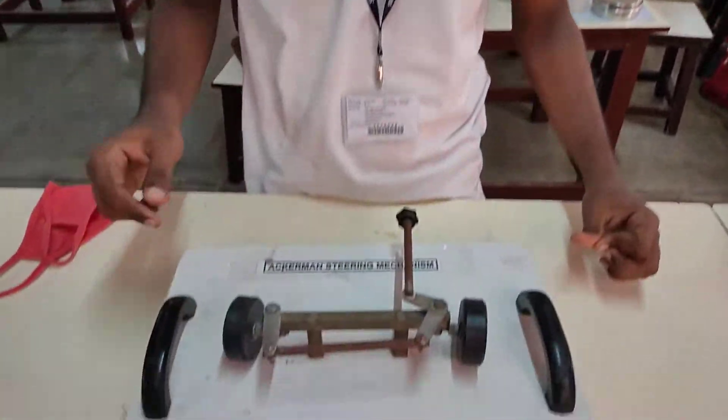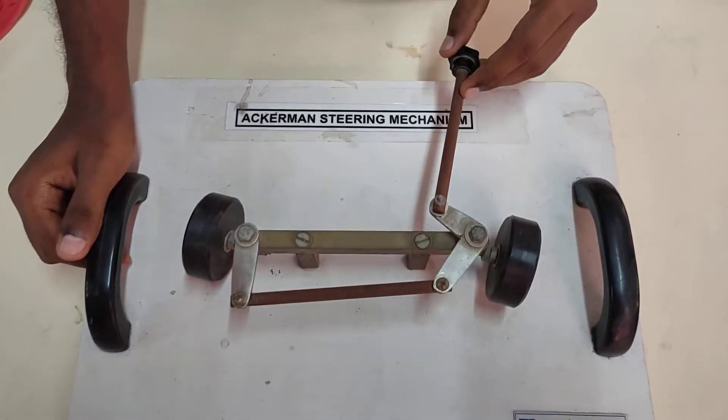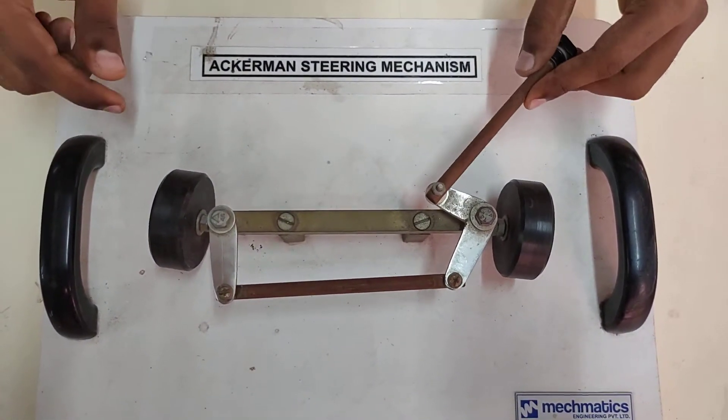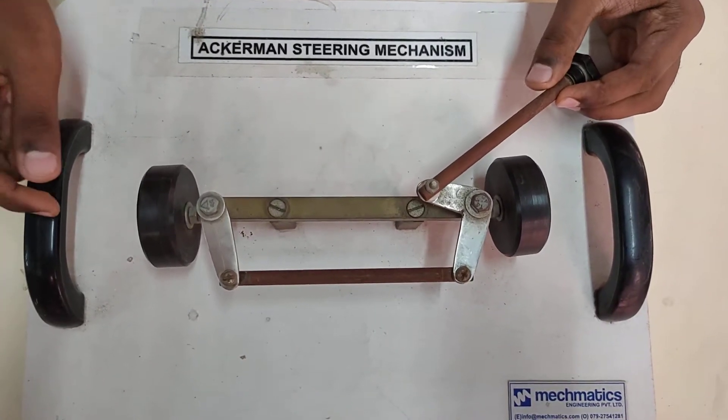Today we are going to talk about Ackermann's steering mechanism. This mechanism was invented by a German designer named Ackermann, hence the name. It was initially designed for horse-carriages.